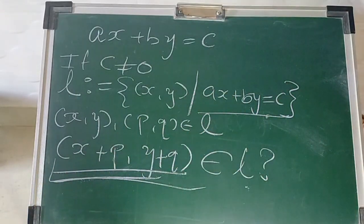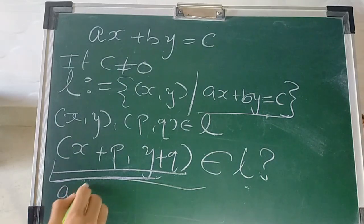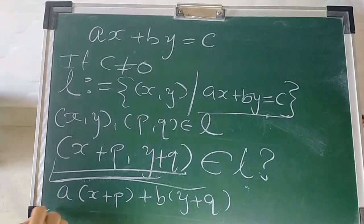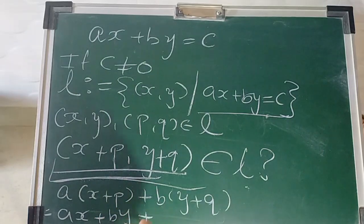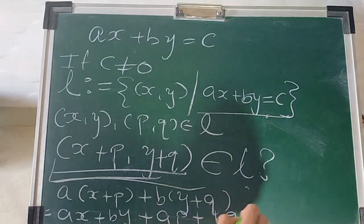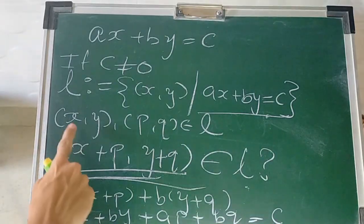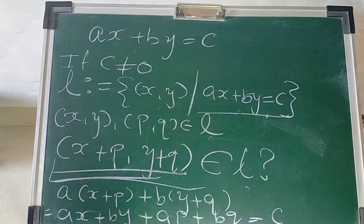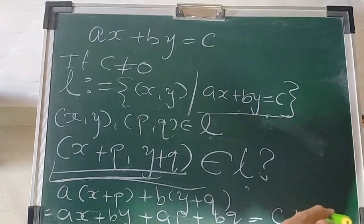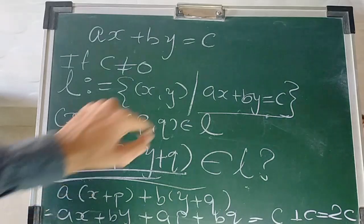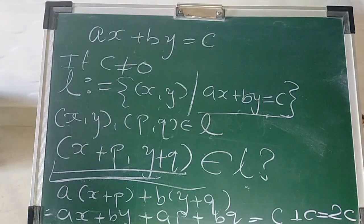It will be an element of L if substituting into the equation gives c. But you will observe that substituting gives a(x+p) + b(y+q) = ax + by + ap + bq. Since (x, y) is in L, ax + by = c, and since (p, q) is in L, ap + bq = c as well. So the result is 2c, not c. If c ≠ 0, addition is not closed — the operation is not binary on that line.